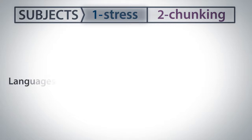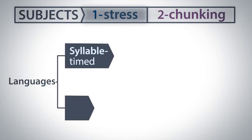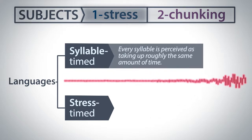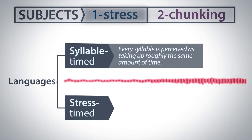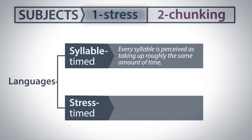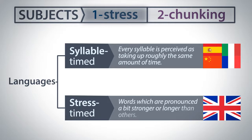Languages are broken into two types: syllable-timed languages and stress-timed languages. In syllable-timed languages, you focus on each syllable with the same amount of stress and time. As you can hear from the second example, English follows the second type of language, stress-timed. This means that some words are stressed more than others.